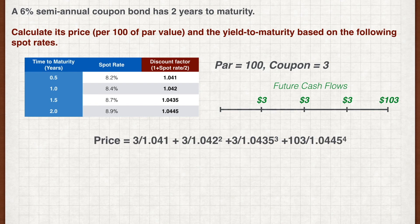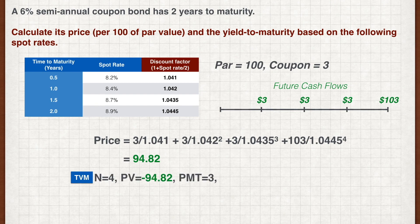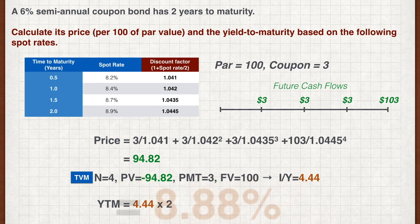Discounting all the future cash flows by the appropriate discount factors, we get a price of 94.82 for the bond. To find the yield to maturity at this price, we use the TVM calculator. Plugging in the figures, we get a yield of 4.44 percent per period. To get the annualized yield to maturity, simply multiply this by two, giving us 8.88 percent.